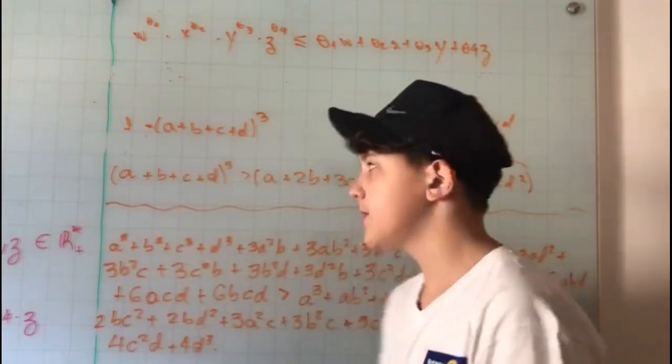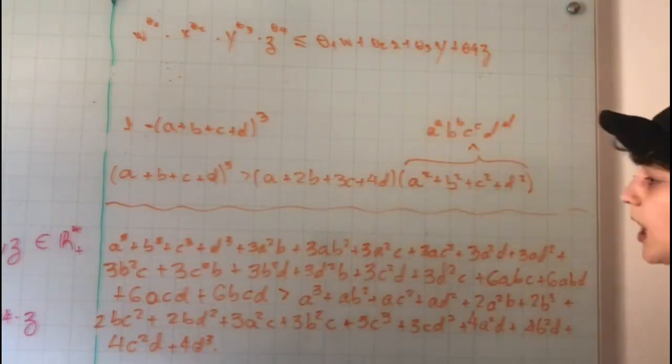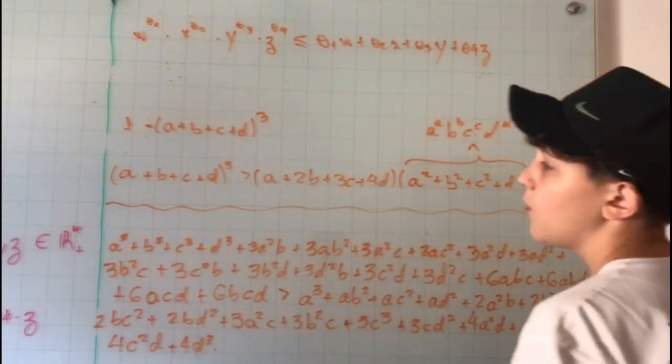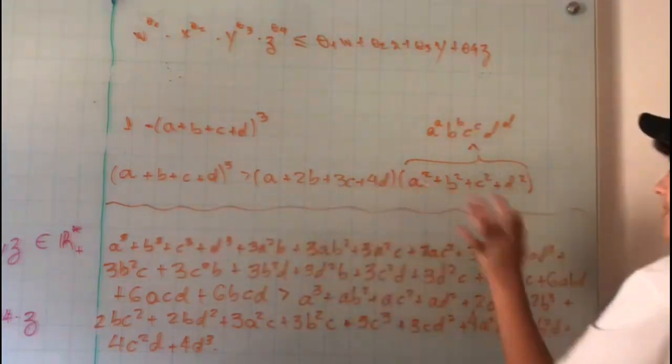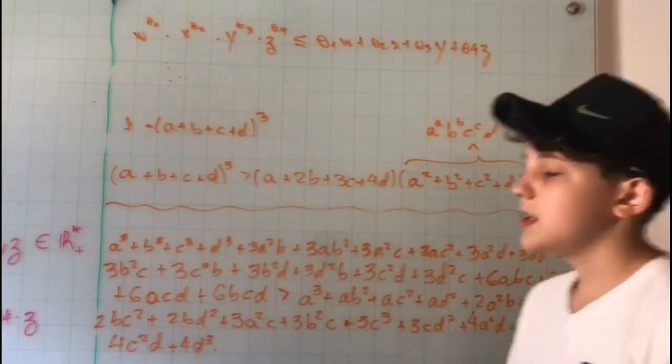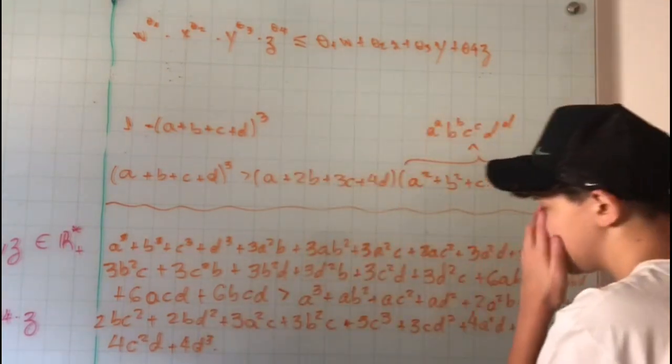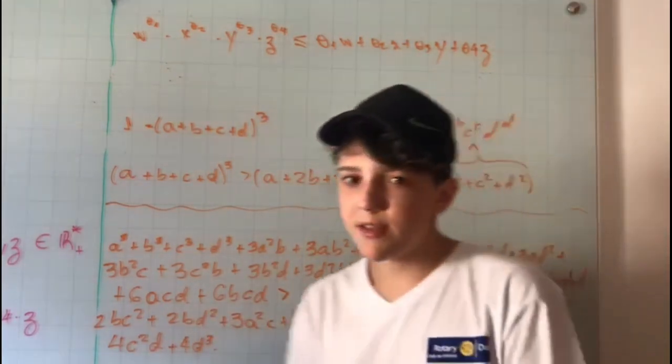Then if we show that this thing is bigger than this thing, we automatically show our statement and prove the question. That's finished. All I did in these numbers and whole letters and numbers was expanding this term, this term, and this term.